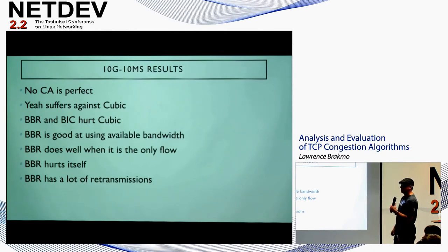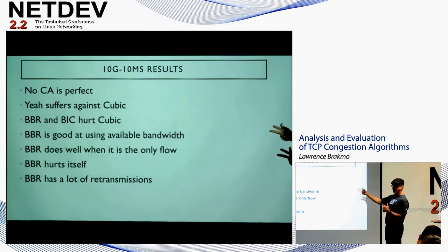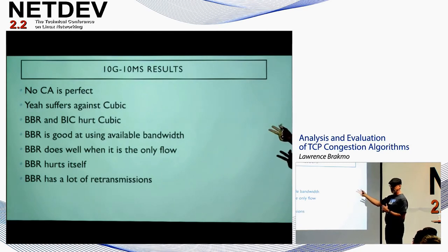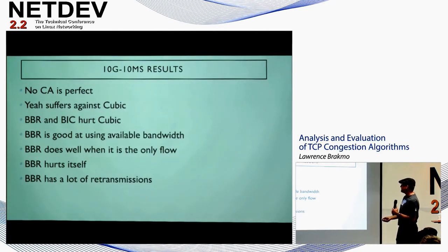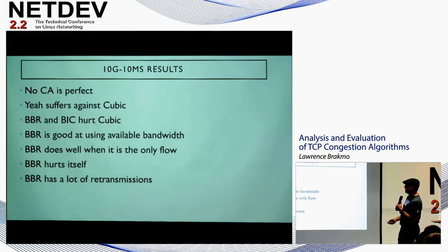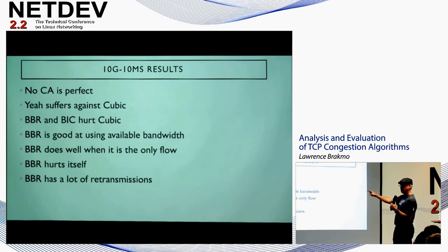Summary of results: No congestion algorithm is perfect — they suffer in one way or another. BBR has more retransmissions but is very fair in most cases. NV suffers against Cubic, so it's probably not a good choice for mixed traffic. BBR and BIC hurt Cubic. BBR is very good at using bandwidth, especially as the only flow. However, BBR hurts itself 20% of the time with flow collapse, and has a lot of retransmissions in the data center environment.